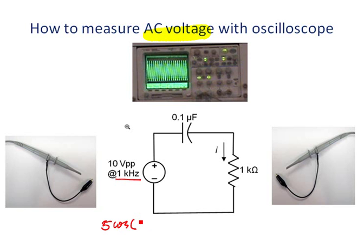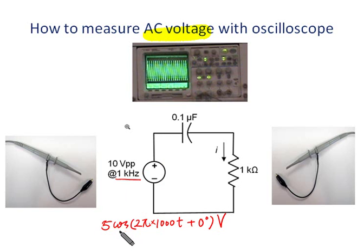The angular frequency should be 2 pi times 1000 radians per second, so omega t plus 0 degrees. Generally, we assume the power supply is a reference, so the phase angle is 0 degrees.